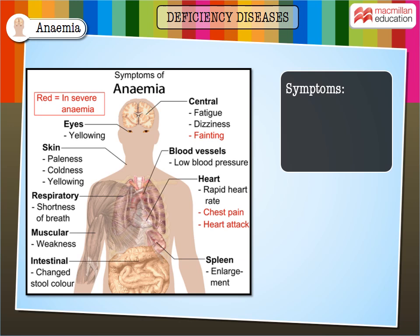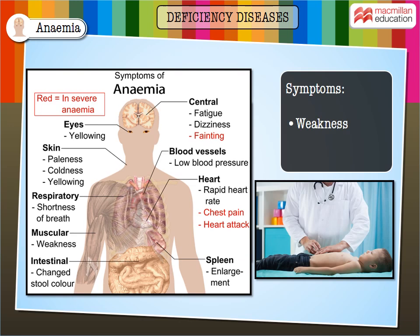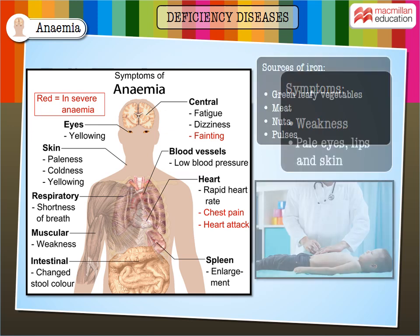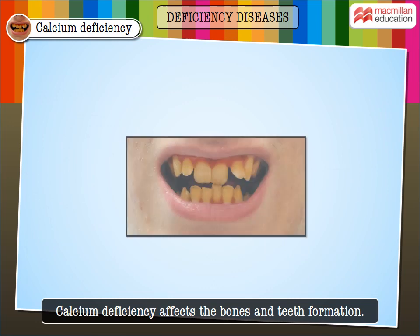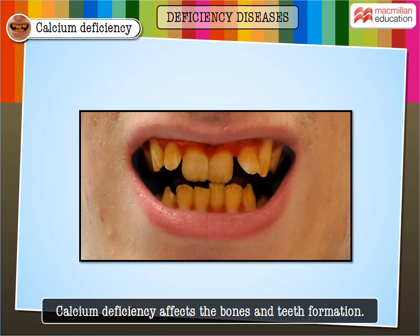Anemia is caused due to the deficiency of iron. An anemic person becomes weak and dull; pale skin, pale eyes, lips, and nail beds become dull and almost white. Plenty of green leafy vegetables, meat, nuts, and pulses should be included in the anemic person's diet.